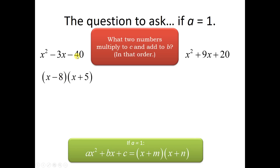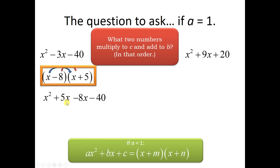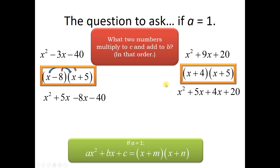The two numbers that multiply to 40 and add to negative 3 would be negative 8 and positive 5. Let's verify: distributing x times x plus 5 and negative 8 times x plus 5, when you combine like terms those two middle terms make negative 3x. That's why this is correct. You might use FOIL and FOIL is fine — it's a good shortcut — but this is how distributing polynomials always works. For the next one, the two numbers that multiply to 20 are 4 and 5, and 4 plus 5 is 9. 4x plus 5x is 9x, and 4 times 5 is 20. We're golden.